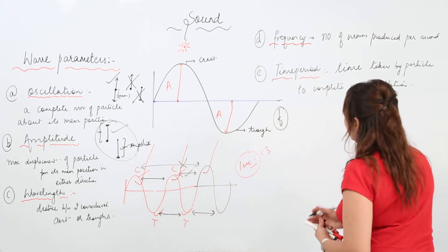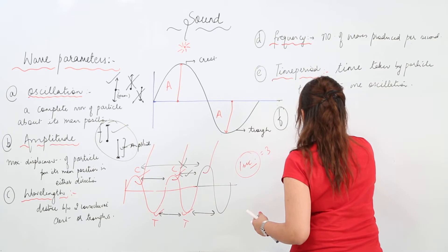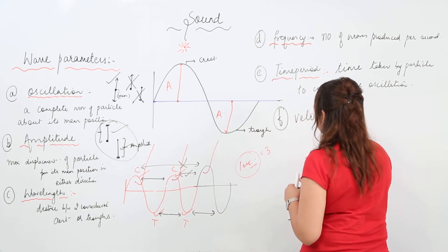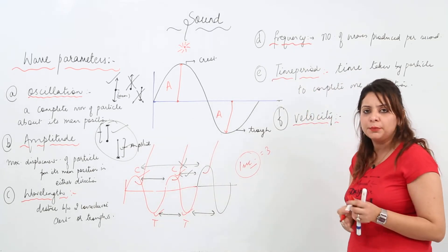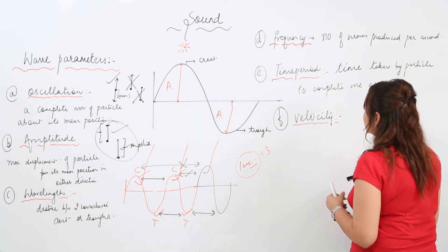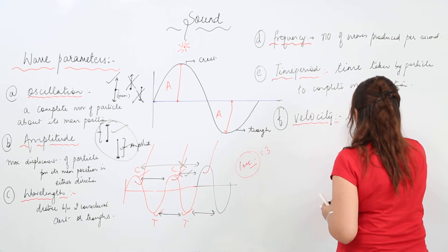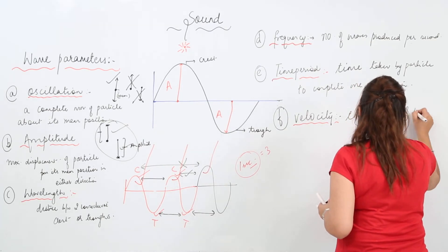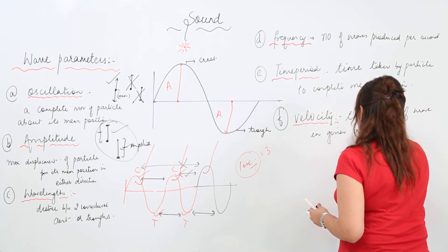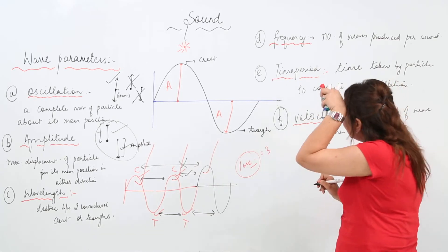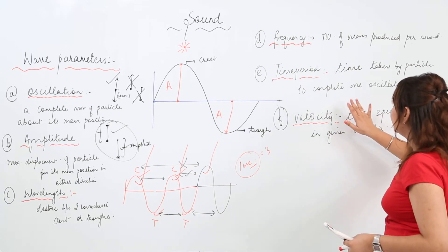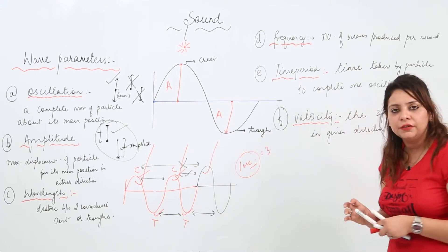The next parameter is velocity. As you know, velocity is speed in a given direction, which we covered in the chapter on motion. Here, velocity describes the speed of the wave in a given direction, or we can say the distance travelled per unit time by a wave. So this is the velocity — the speed of the wave in a given direction.